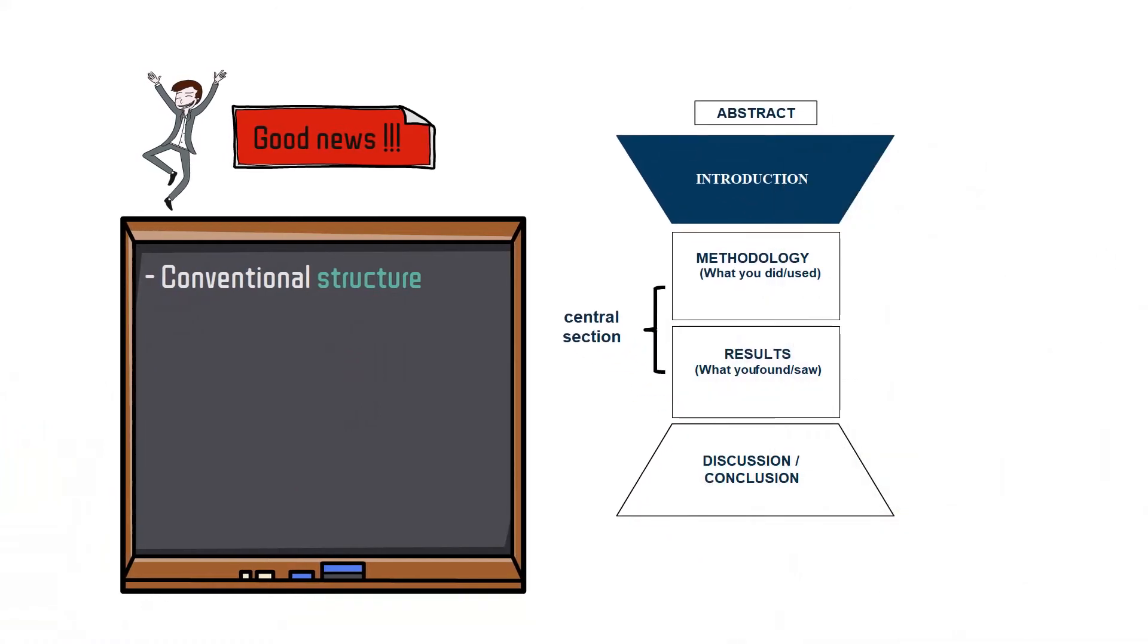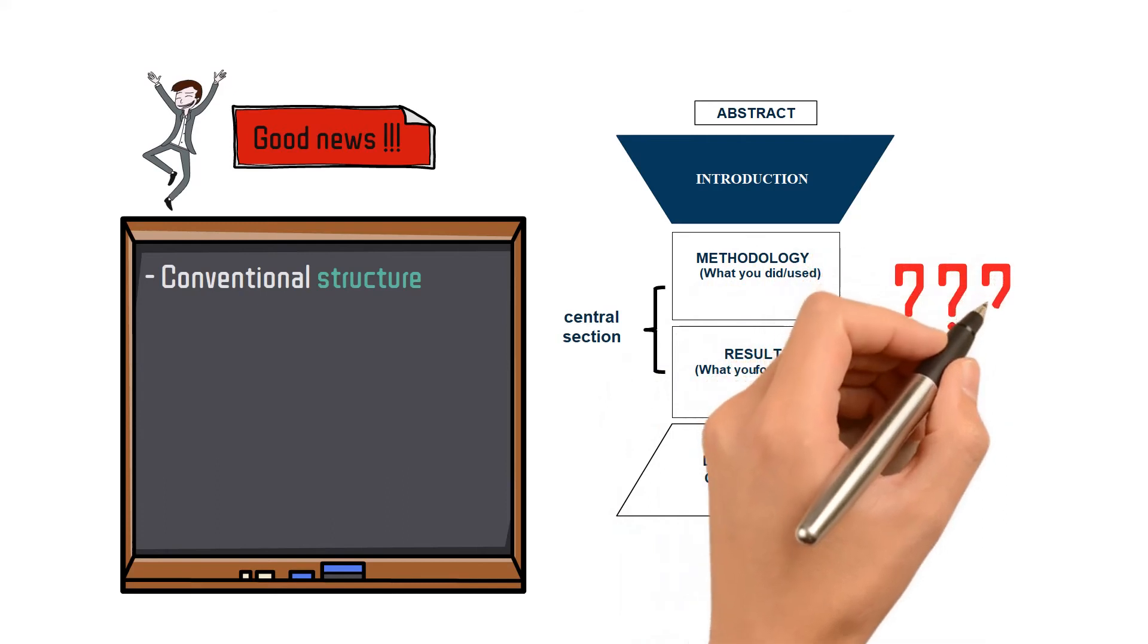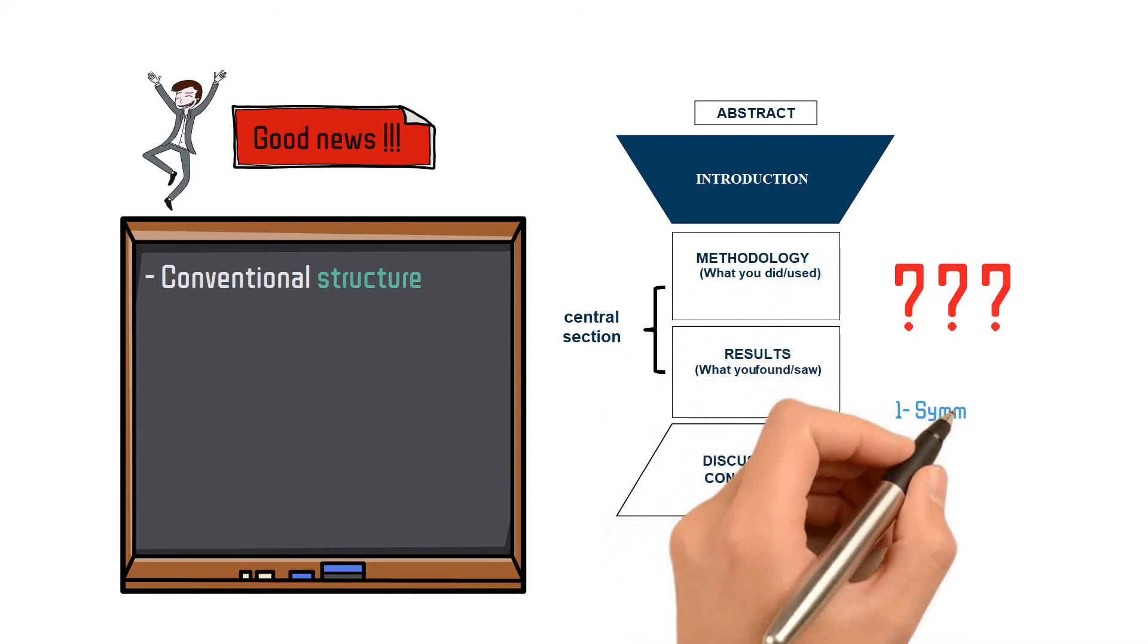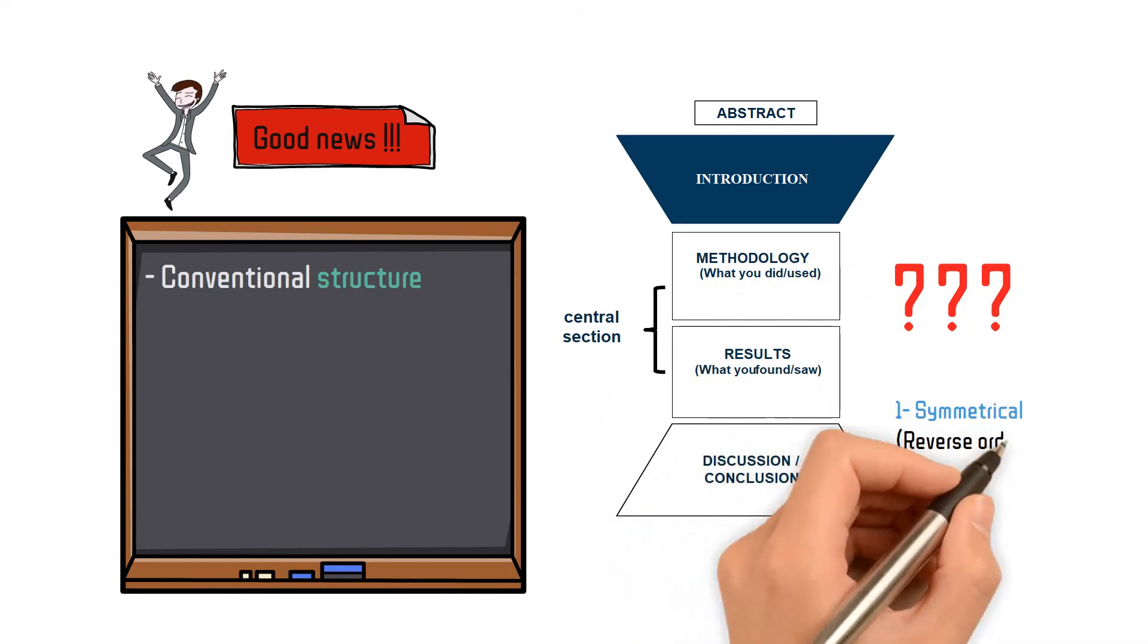The conventional structure is what we all know: introduction, methodology, results, discussion, and conclusion. But tell me, what do you notice about this diagram? Well, it's symmetrical. This simply means what's done in the introduction section should be done in the reverse way or reverse order in the discussion and conclusion section.